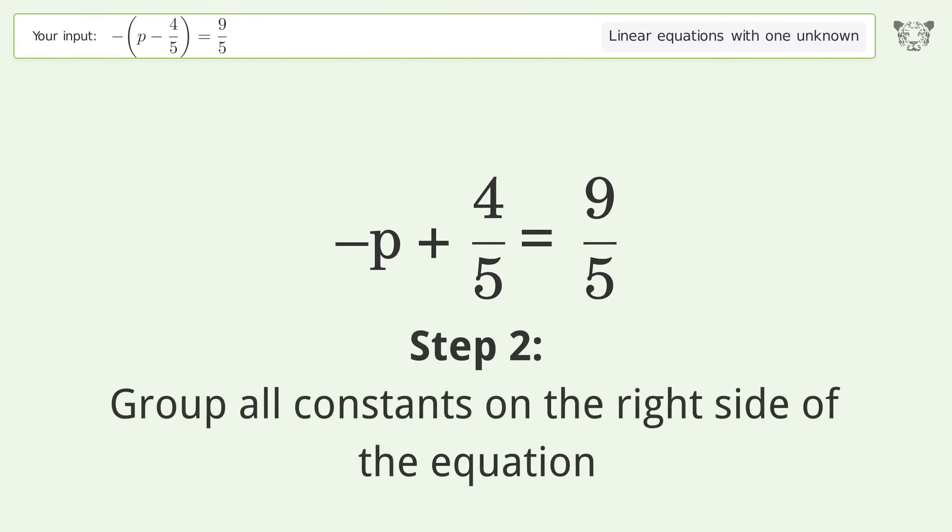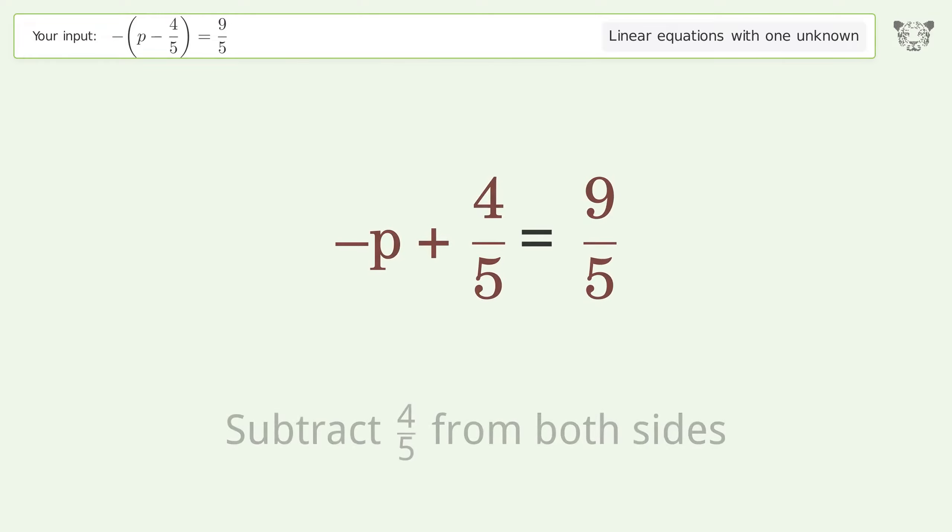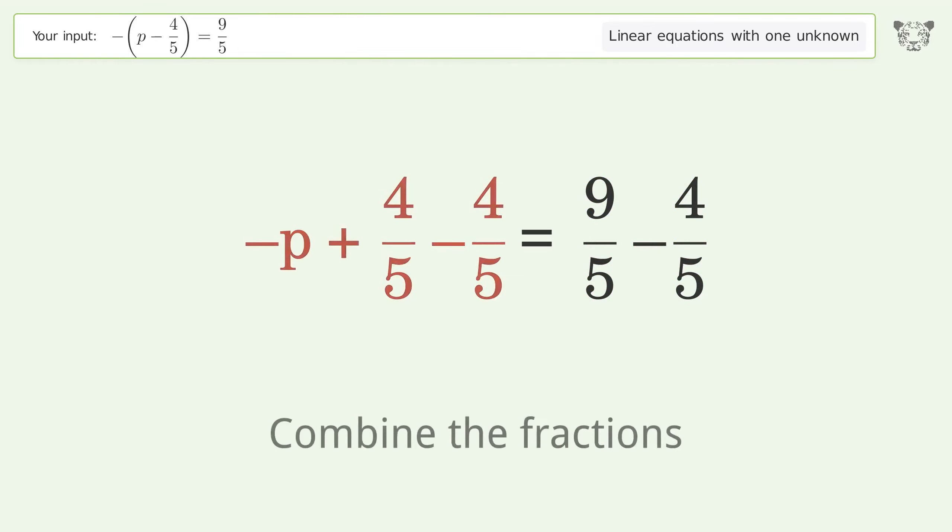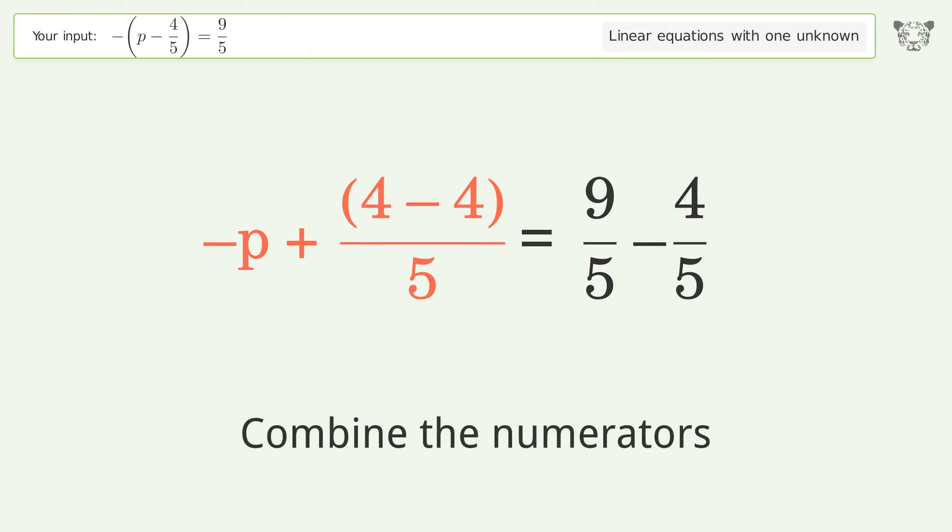Group all constants on the right side of the equation. Subtract 4 over 5 from both sides. Combine the fractions, combine the numerators.